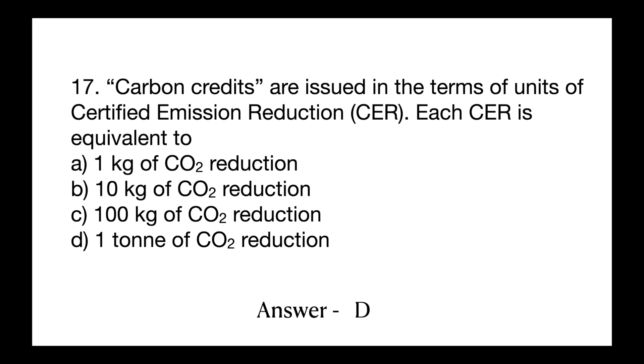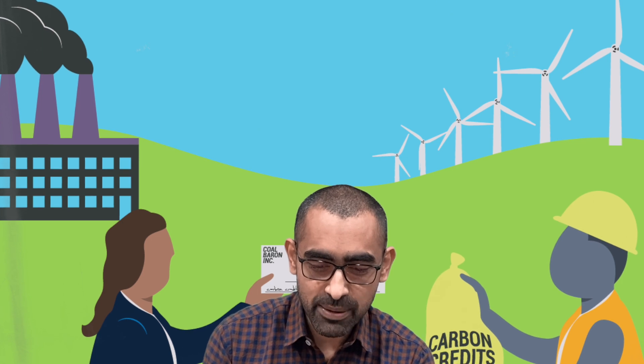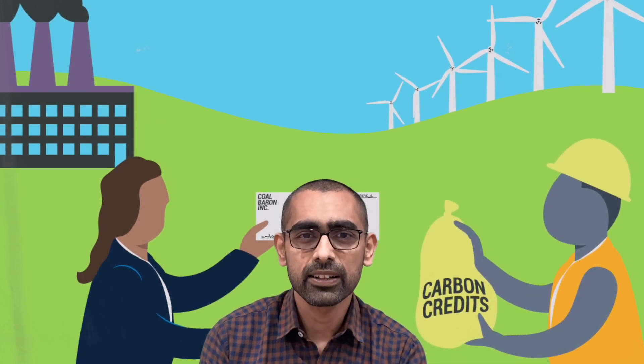Question number 17 is from environment. Environment is a very important part of the syllabus and this is a straight question asking about the unit of carbon credit. The answer is one ton of CO2. In environmental studies there are peculiar terms such as Certified Emission Reduction, and many other jargons. Questions on carbon footprint and carbon credit trading are expected, so be aware of all these terms.